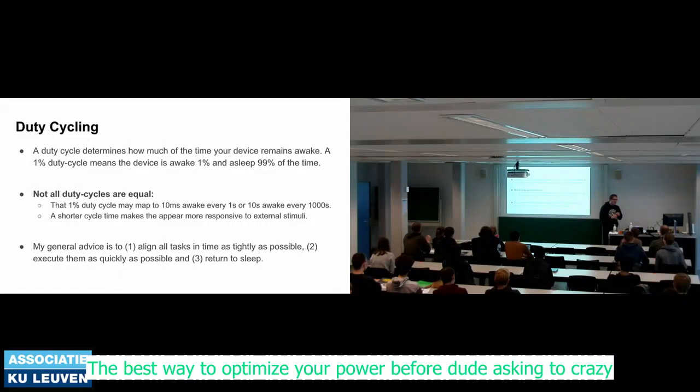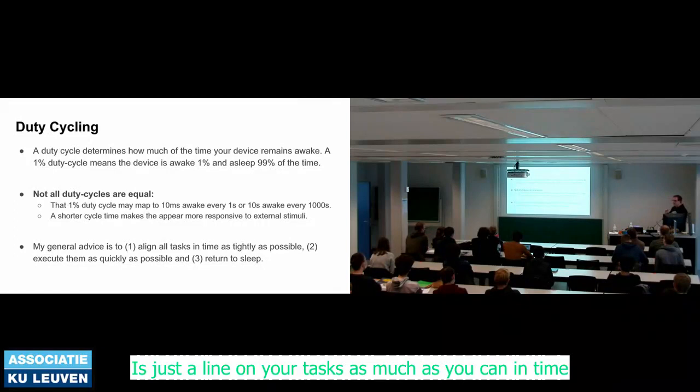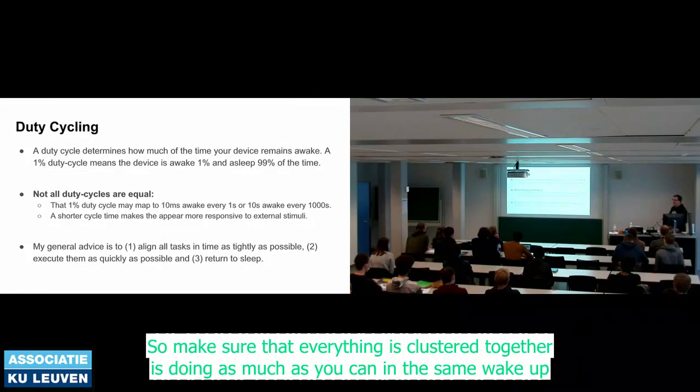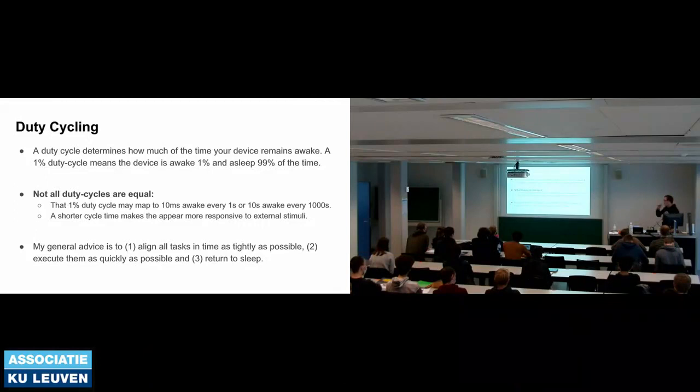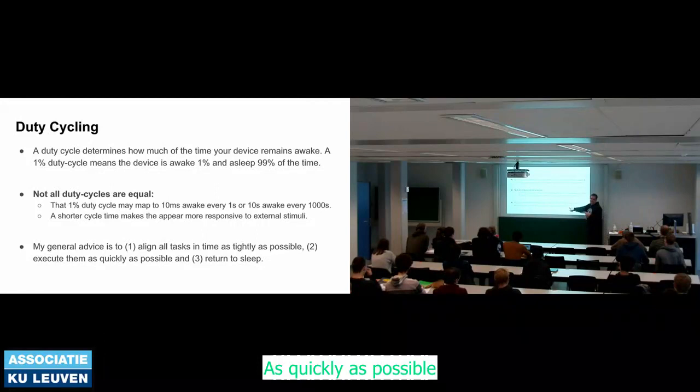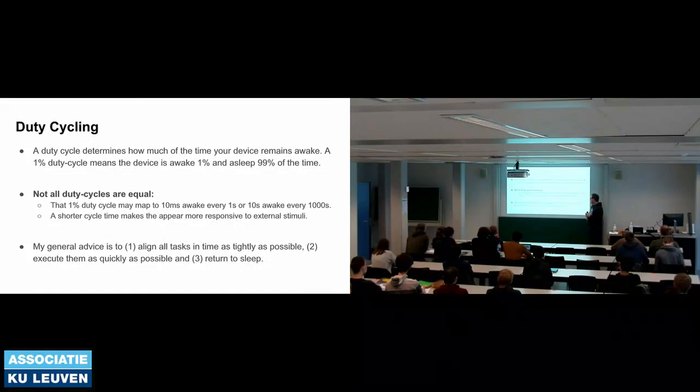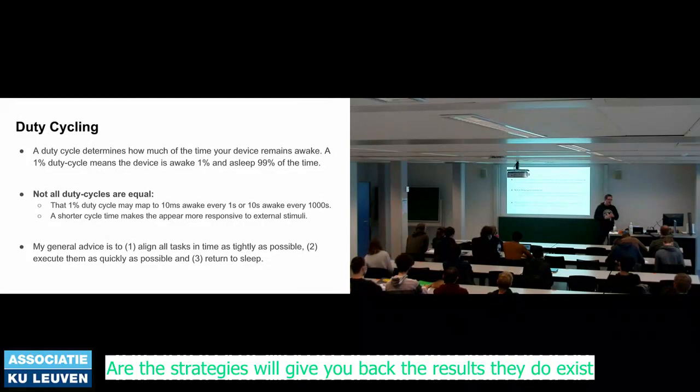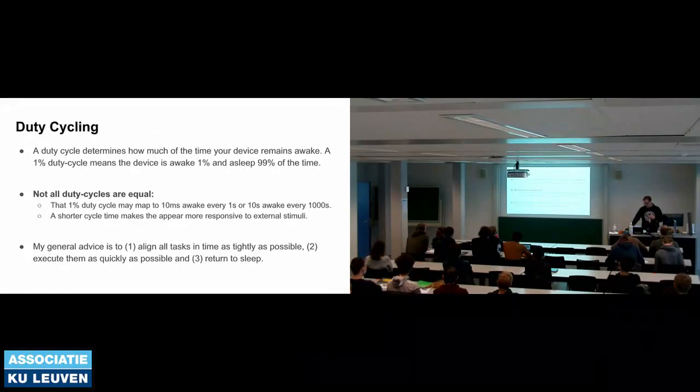The best way to optimize power before doing anything too complex is to align all your tasks as much as possible in time — cluster everything together, do it all in the same wakeup, execute them as quickly as possible at the top speed the CPU allows, then get back to sleep as quickly as possible. Very simple. There are very few cases where other strategies give better results.